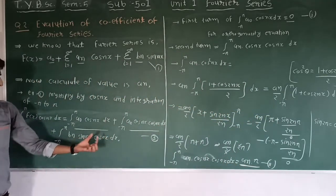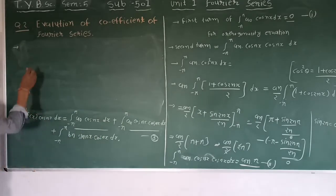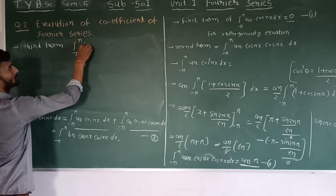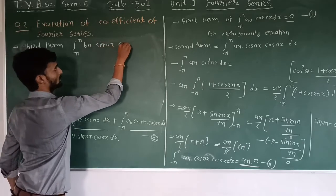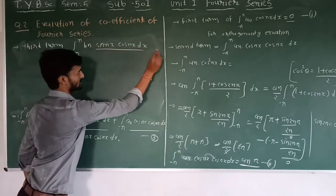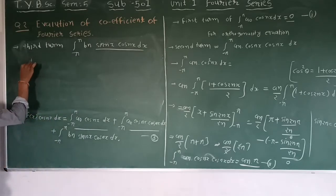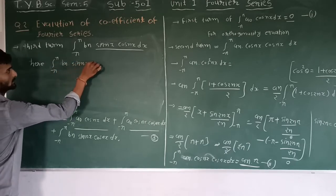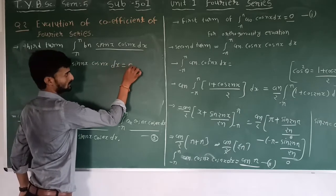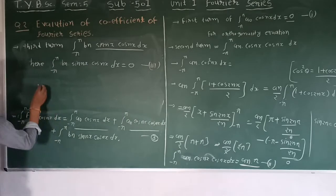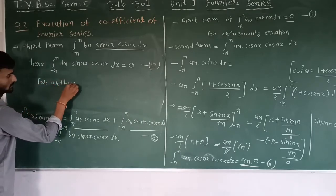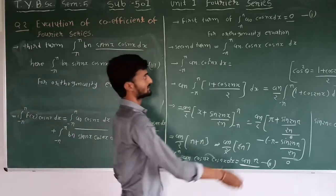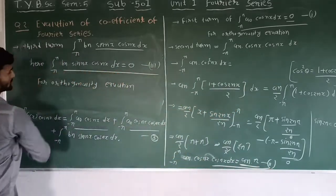Now for the third term: the integral from minus pi to pi of BN sin(nx) cos(nx) dx. By orthogonality, sin(nx) cos(nx) integrated from minus pi to pi equals zero. So this term is zero by orthogonality equations.